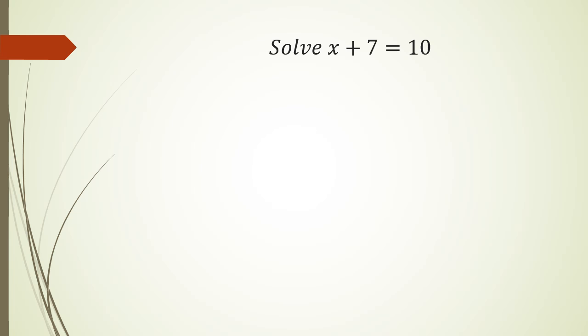With rearranging, if you look at the previous video in this series, you'll know that we can simply do this as x equals 10. And because this is positive 7, when we shift it to the other side, it becomes minus 7. So this becomes x equals 3. That's basically all we need to do for this.